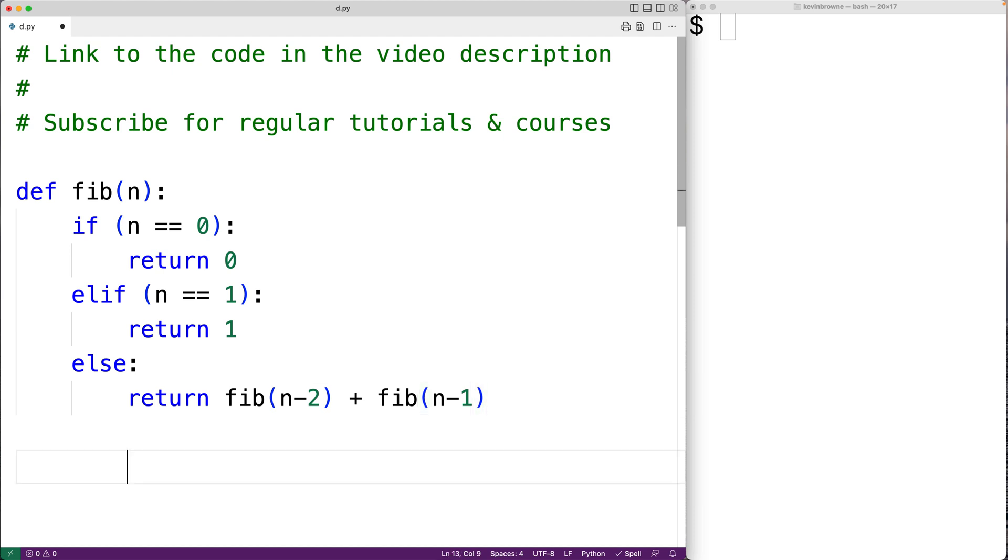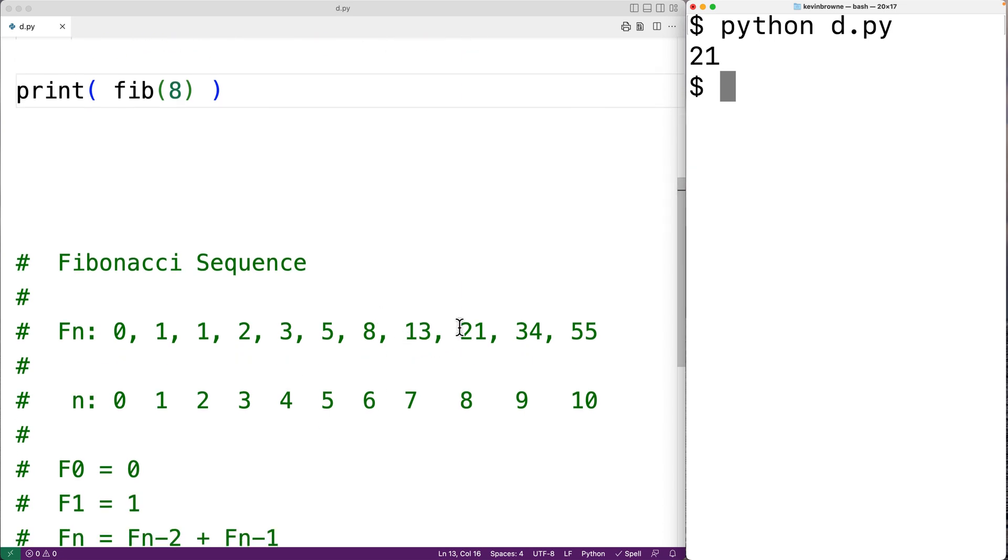Let's try this out. Here we'll have print and fib(8), so we'll try to calculate term 8 in the Fibonacci sequence. We'll save this and then run our program, and here we get 21. And that is correct because 21 is term 8 in the sequence.